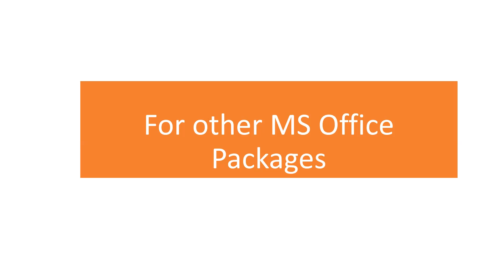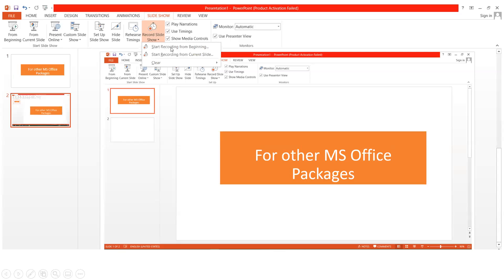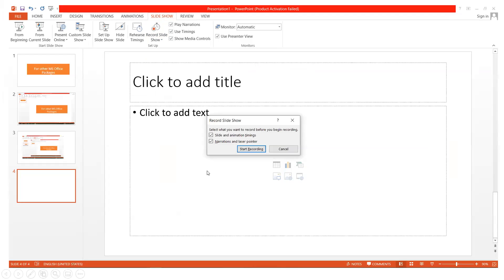If you do not have the Microsoft 365 Office package, you can use your existing Office package to record your presentation. I will show you how to record your presentation using your existing Microsoft Office or PowerPoint package. As I showed you in the 365 package, after opening your presentation, this type of screen window will appear. You have to select the Slideshow button — you can see Home, Insert, Design, Transition, and Animation tabs — but you have to select the Slideshow button.